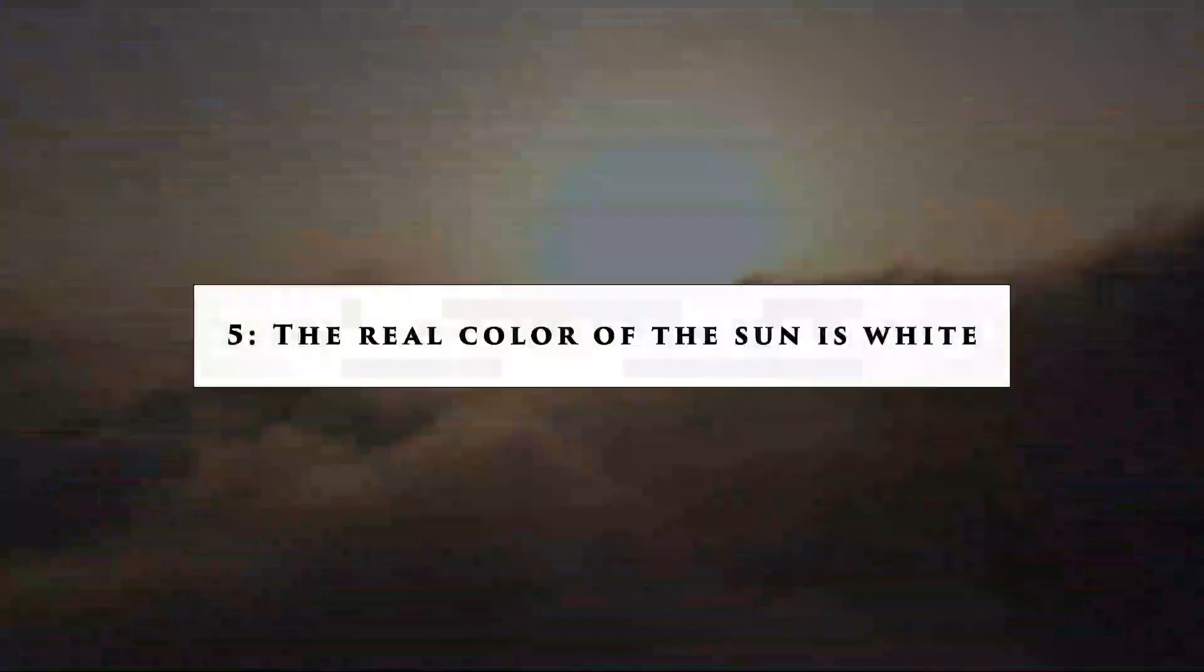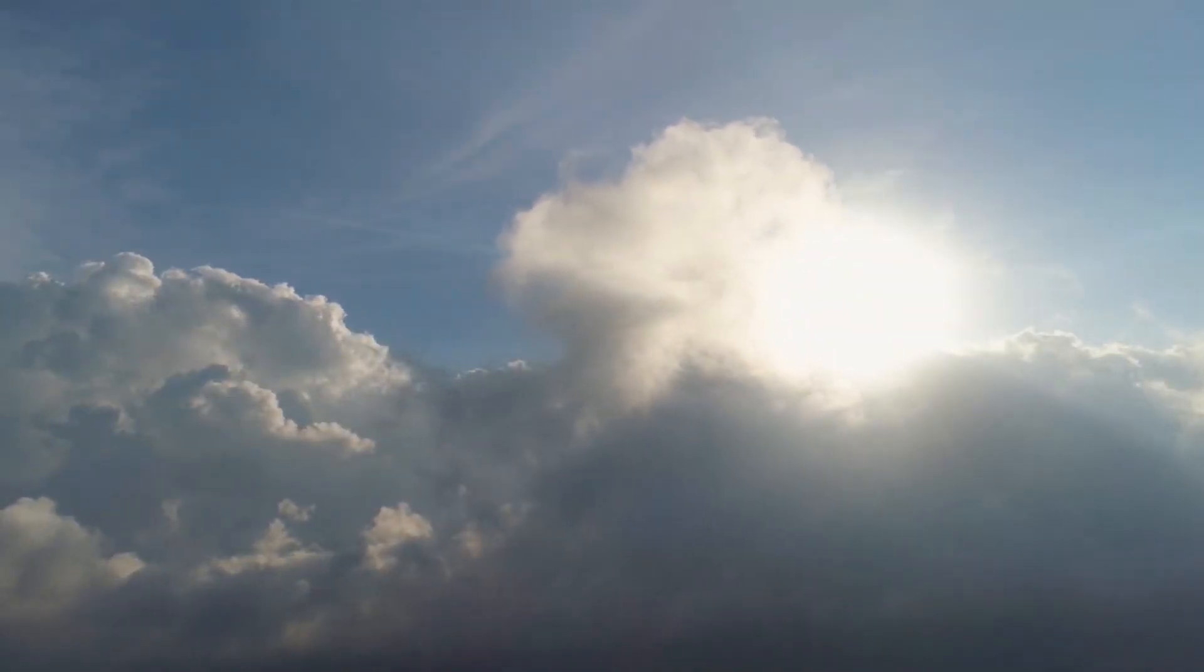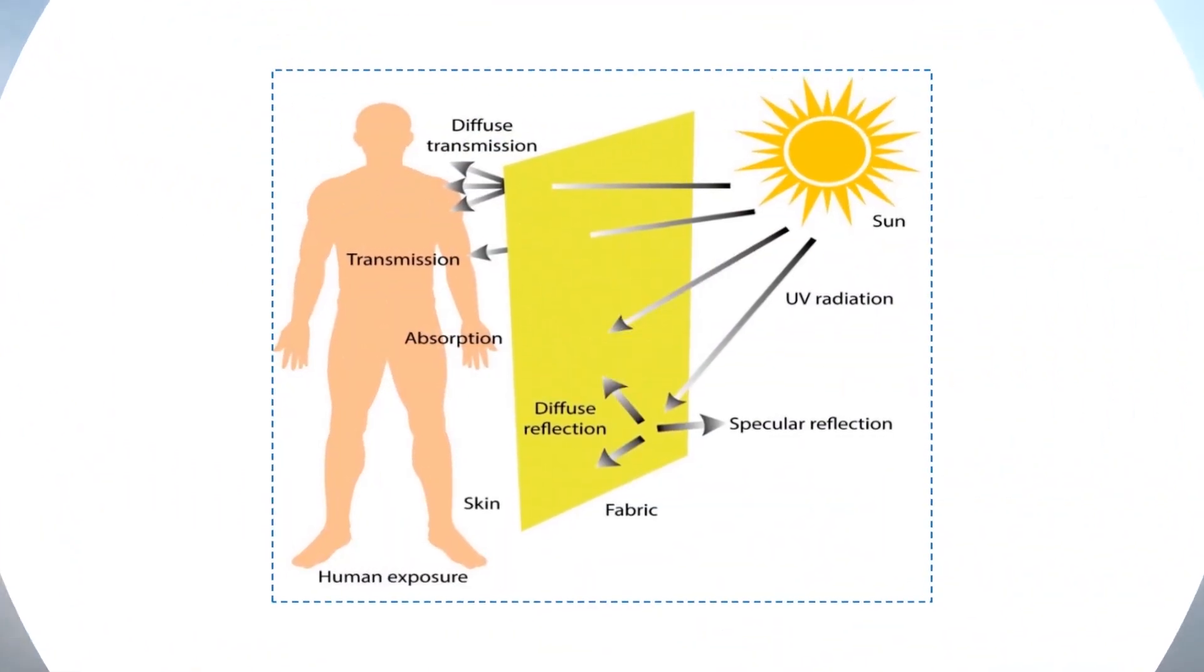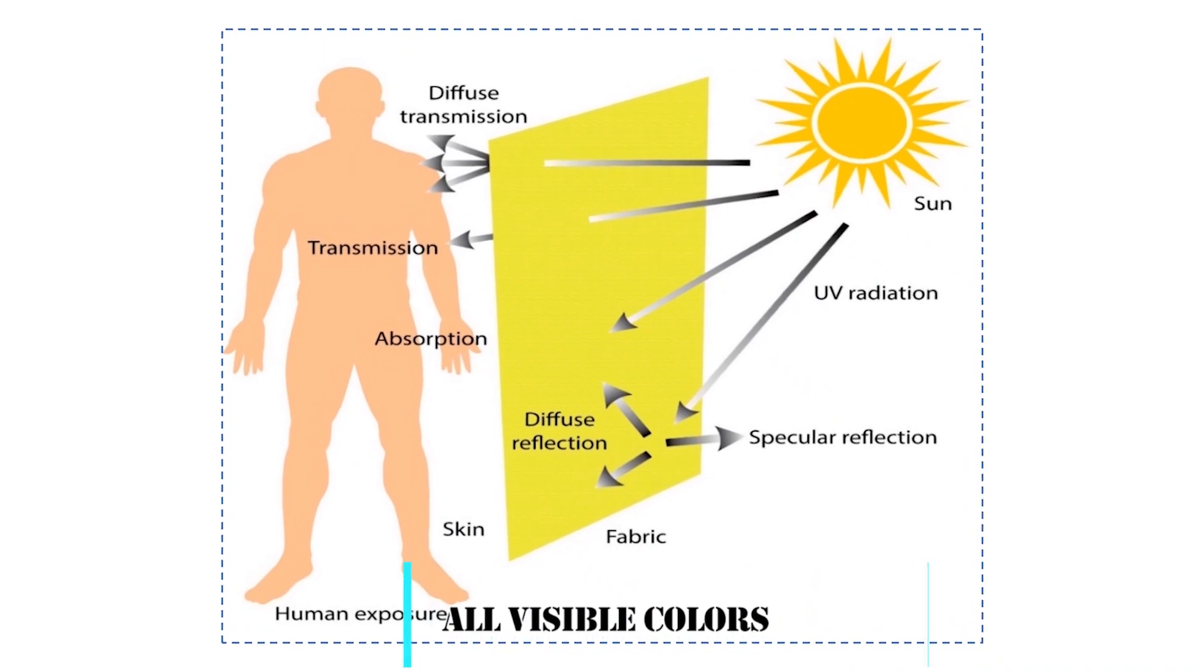Number 5: The real color of the sun is white. The sun unveils its cosmic reality beneath the atmosphere of Earth. It glows in pure white rather than yellow. As the life-giving force, it diffuses an equal density of all visible colors.